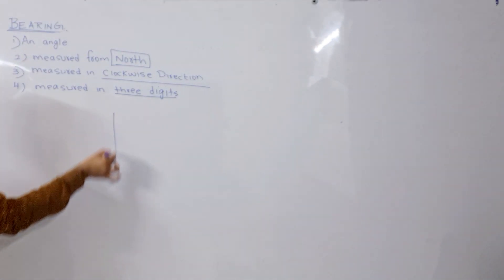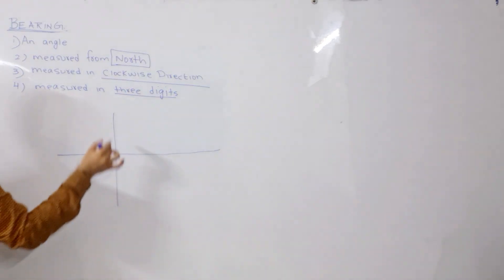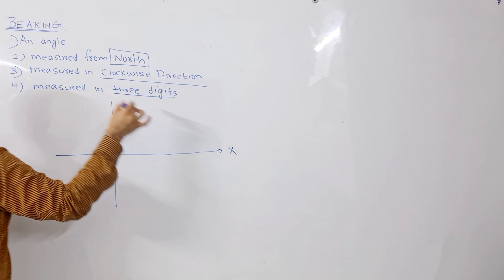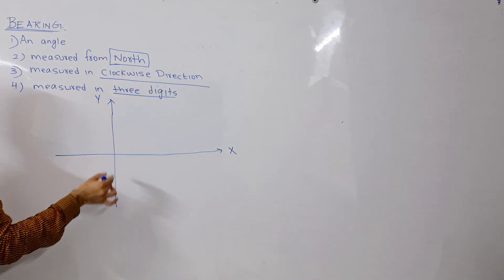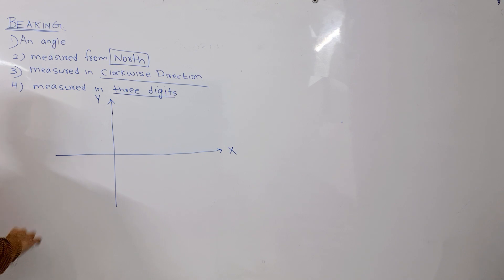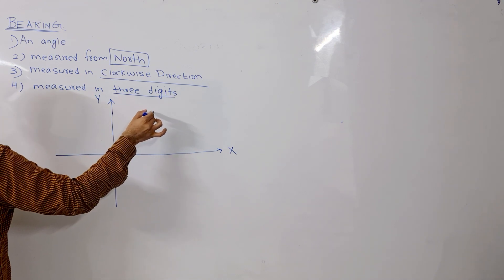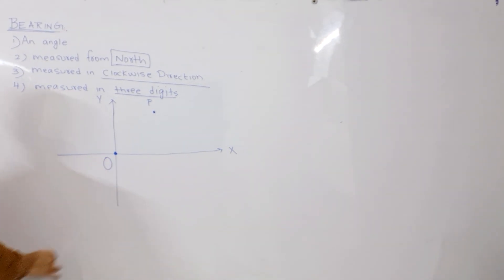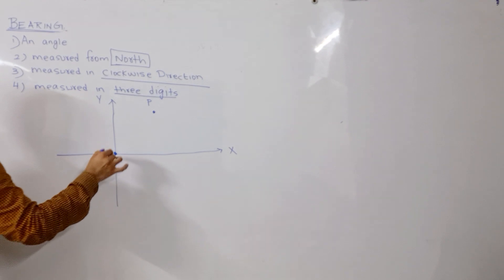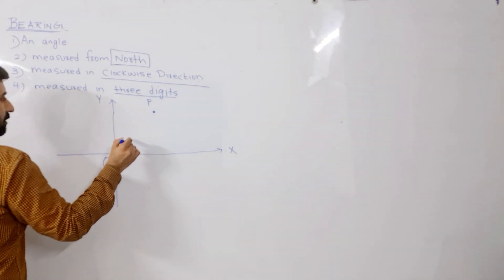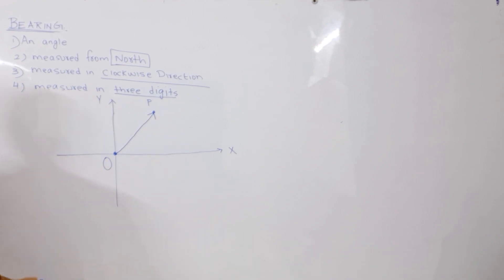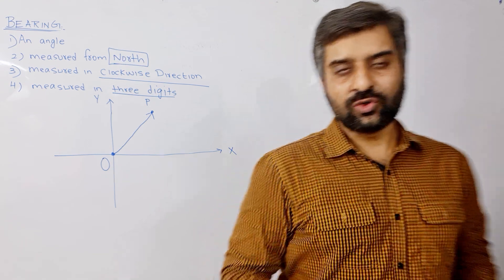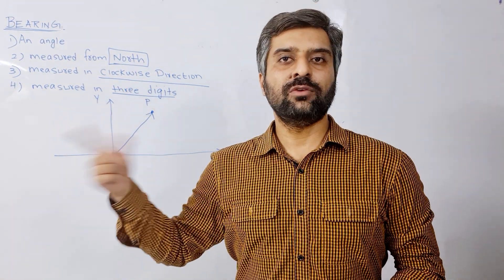Let me introduce a basic concept. This is a coordinate system — here you have the x-axis and y-axis. Now let us take a point over here; this is point B, and this is the origin, the subject point — name it O. Join your origin O with point B, so this is the line OB. Now you have our two points, and we are going to measure the bearing of O from B and B from O.